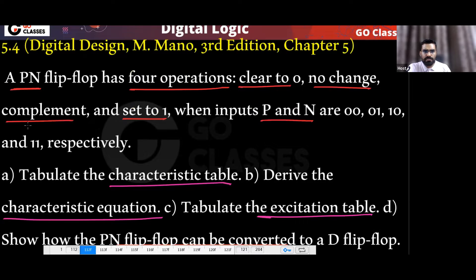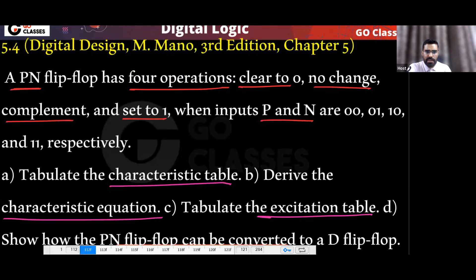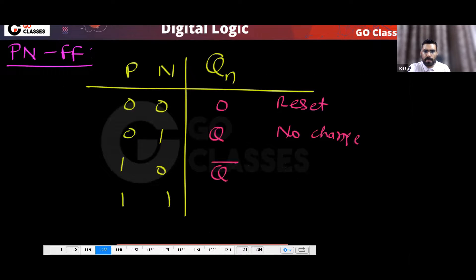When P-N is 0-1, then no change. When P-N is 1-0, then complement — that is toggle. And when P-N is 1-1, then set to one.